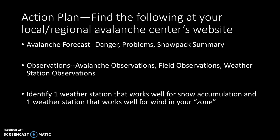Your action plan is to find the following at your local regional avalanche center's website: find where the forecast is published — even if the snow hasn't flown yet and forecasts aren't up, figure out where the avalanche forecast would come in and look for information about danger, problems, and snowpack summaries. Find where the observations area of the website is — they're not the most intuitive, but if you click around you should find them. Finally, identify one weather station that works well for snow accumulation and one that works well for wind in your zone, considering elevation and local knowledge. Thanks for tuning in — hope that was a good review of avalanche bulletins, the CAIC and NWAC websites.